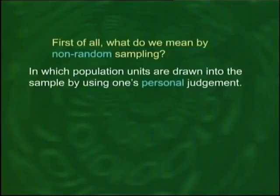As I mentioned earlier, we can have non-random sampling or random sampling. My focus will be very much on random sampling. But before that, let me briefly discuss what non-random sampling means. Non-random sampling is that in which we select the elements using our personal judgment. Within this kind, we have different types, and one of the most popular types is called quota sampling.